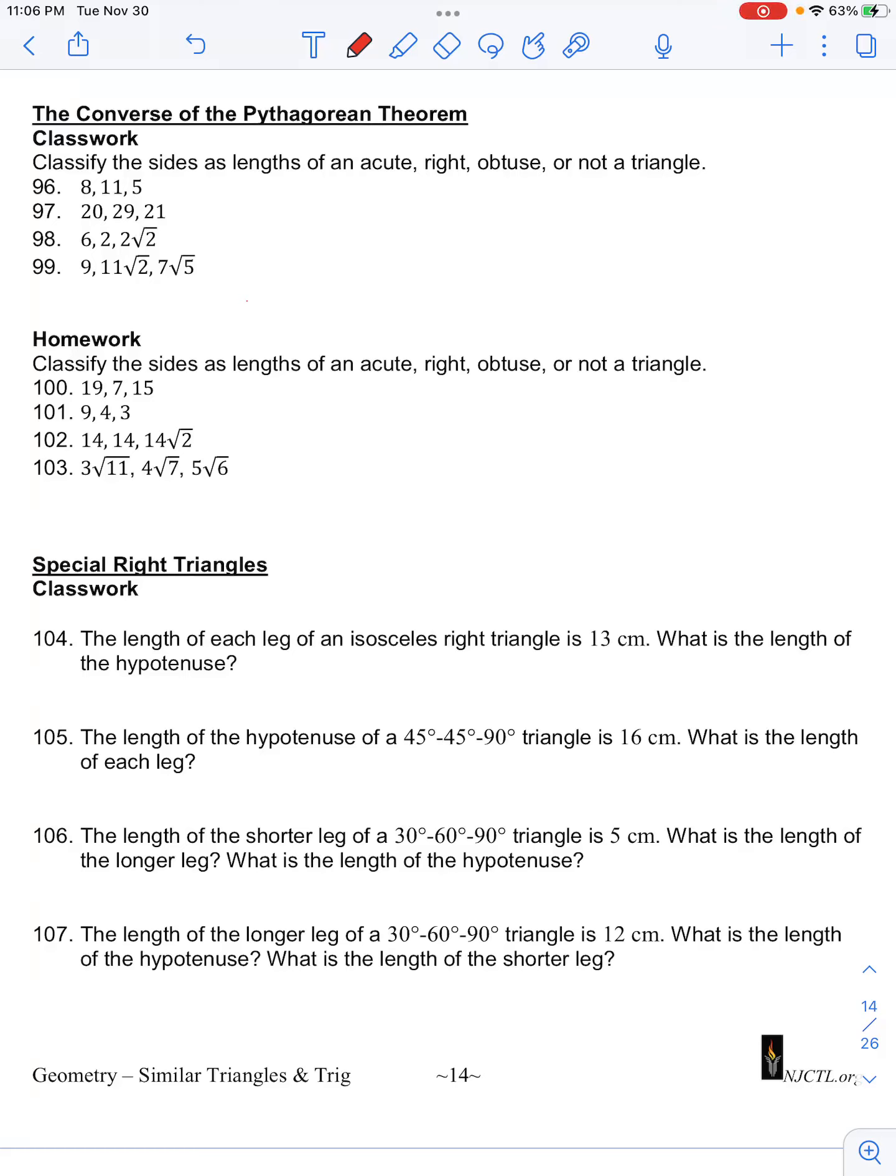Okay, number 99 in your classwork for similar triangles asks you to classify the sides as acute, right, obtuse, or not a triangle.